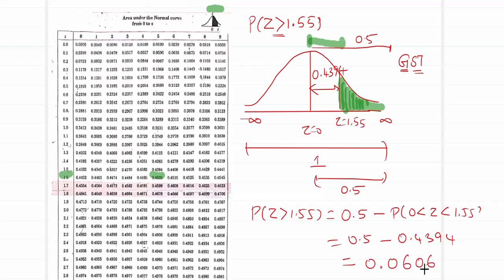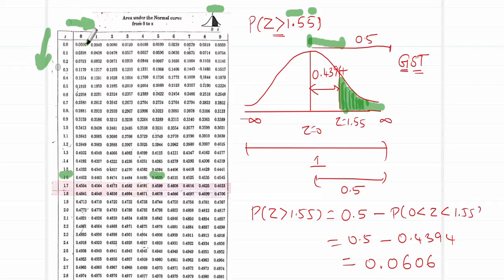Whenever you want a 'greater than' probability, subtract the table value from 0.5. The table value runs from the center line to any particular z position. Look up the first two decimals vertically and the third decimal horizontally — so for 1.55, look up 1.5 vertically and 5 horizontally. If you are clear about evaluating data from your normal distribution charts, the central limit theorem problems will be very straightforward. Thank you.